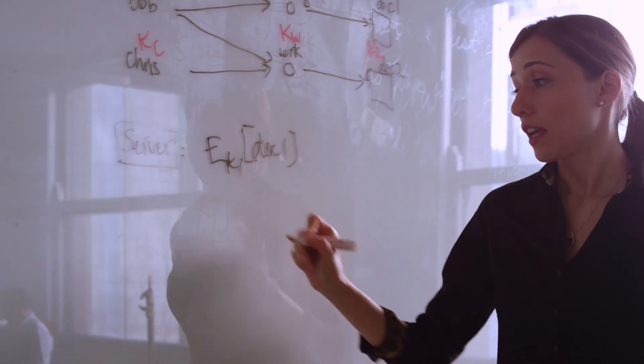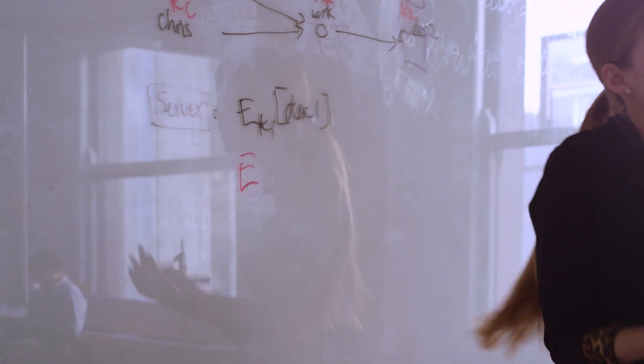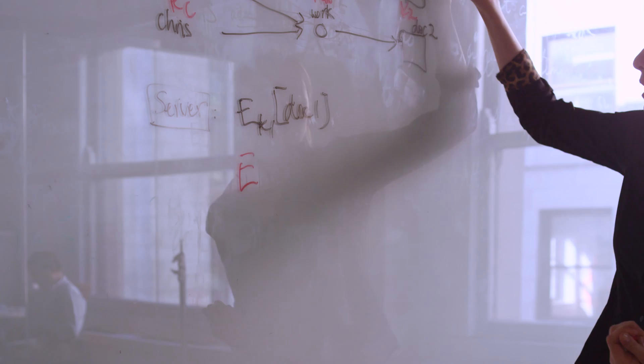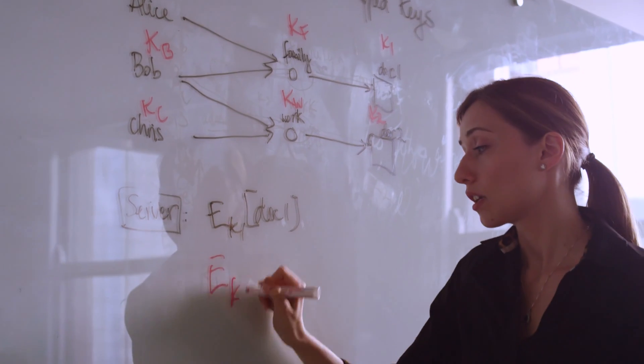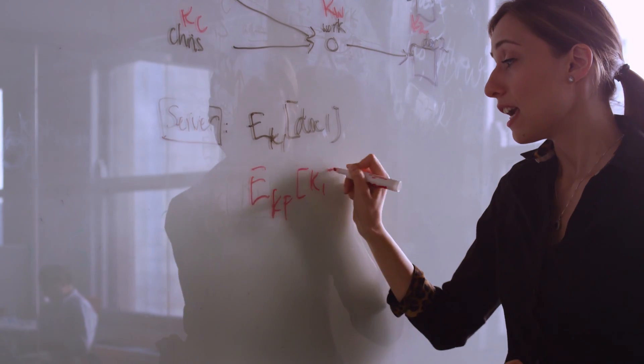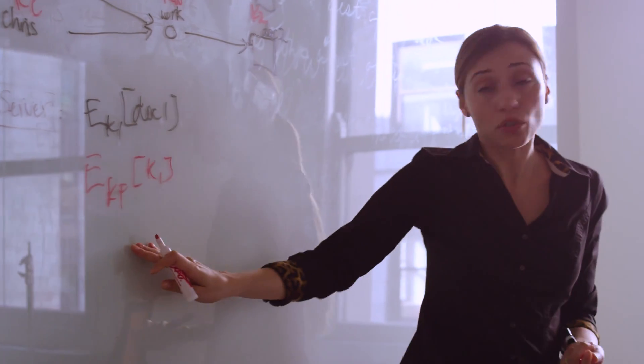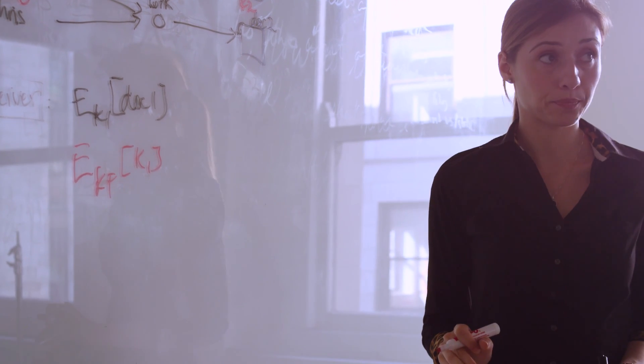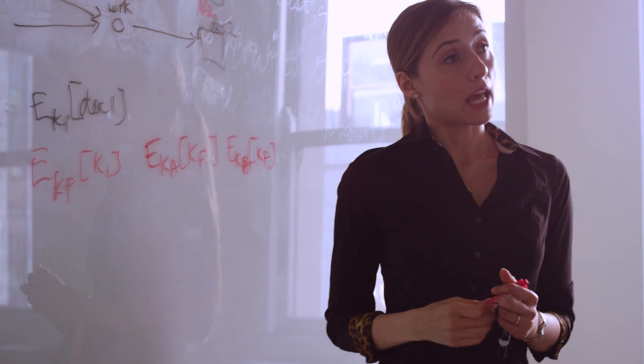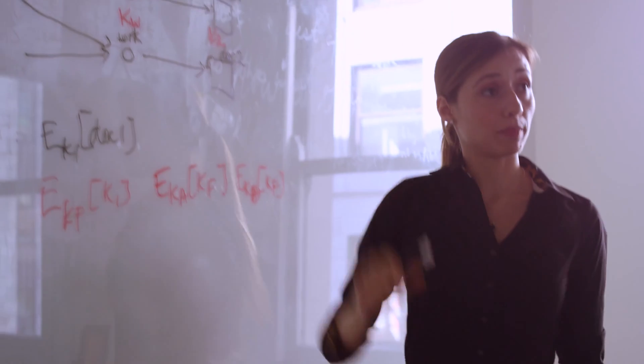In a wrapped key, the server stores an encryption of the key. So we encrypt K1 under the key for the family. And this is safe to do because we're not storing the key decrypted at the server, we're storing it encrypted so the server doesn't actually see it.